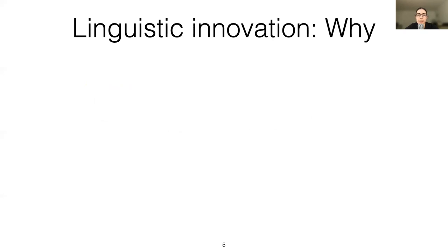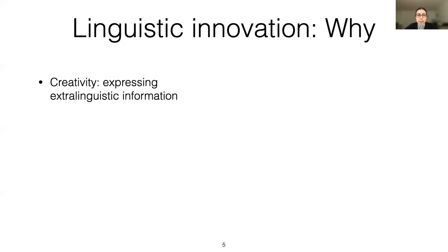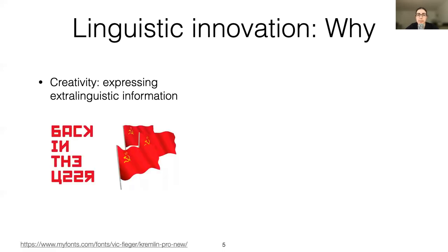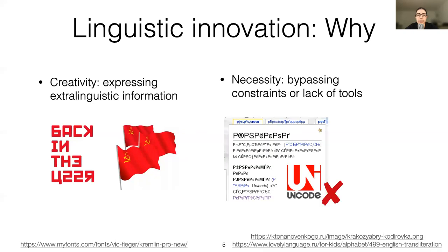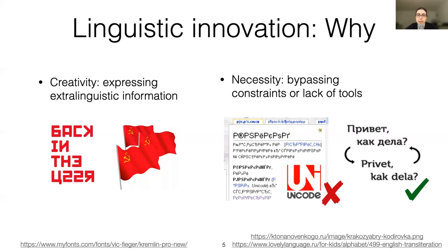I wanted to mention why this kind of phenomenon happens. Comparing two examples that are similar in many ways — they both use a non-traditional script to represent text in a language — it could be used creatively, like to express extra-linguistic information, as in the example of Cyrillic characters used in English text to evoke associations with the Soviet Union. But it could also arise out of necessity. In the early 2000s, browsers would often have encoding problems — if you typed something in Cyrillic, it would come out completely unreadable. One easy way to circumvent this was to encode your Cyrillic-script language, like Russian, in Latin characters. This is exactly what I'm going to be talking about today.